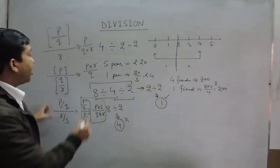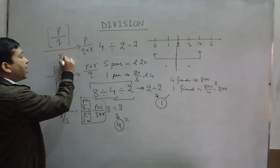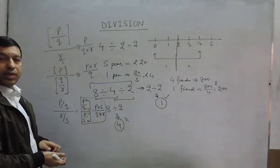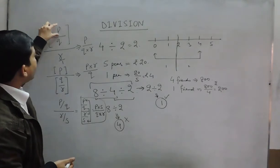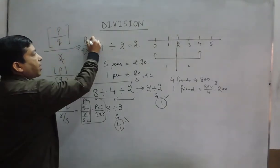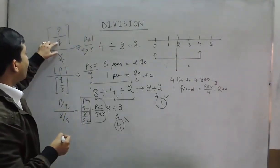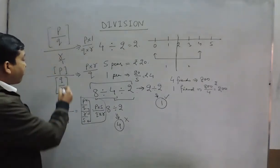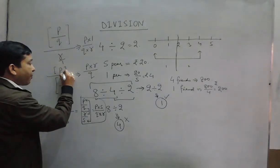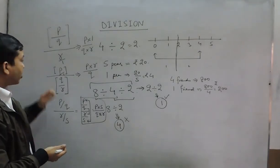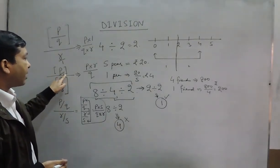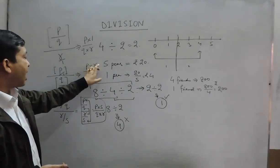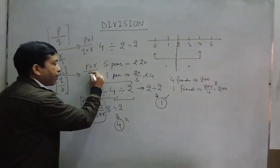When we say it is r only, this can be written as r upon 1. Then in the case where p/q is divided by r, the numerator p has to be multiplied by 1 and q multiplied by r. Similarly, when p is divided by q/r, p times r goes in the numerator and q in the denominator.